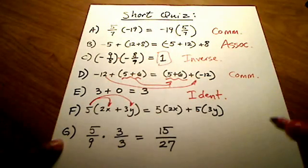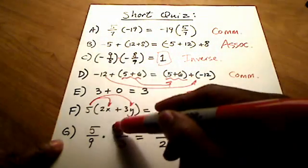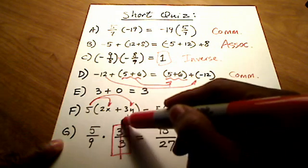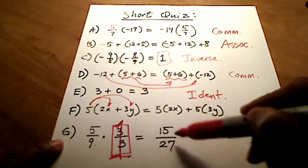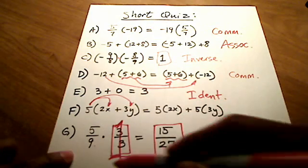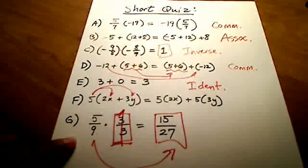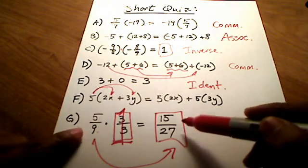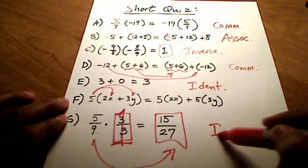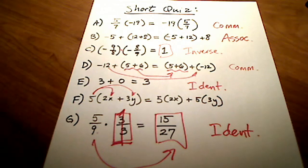This last one, I hope you see, any number over itself is really just a 1. So I'm really multiplying 5 ninths times 1 and getting itself. Now this looks a little different, I realize, than what you started with, but these two fractions are really exactly the same. Therefore, this is the identity property. Hope you did well on that quiz. We did well with this. I'll see you later.